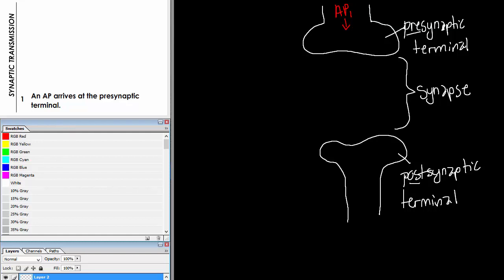Inside the pre-synaptic terminal are membrane-bound structures called vesicles, and they contain chemicals called neurotransmitters. This structure here is a vesicle — something like a vacuole — and inside is neurotransmitter, short form NT. These are special chemicals that are going to be involved in synaptic transmission.